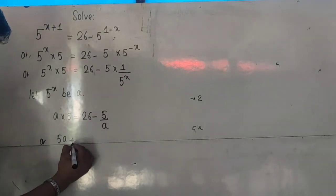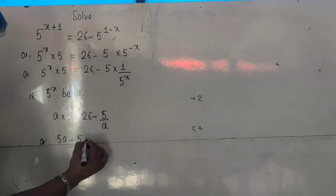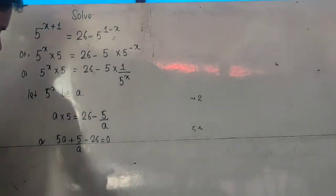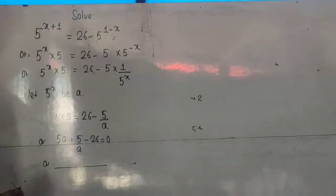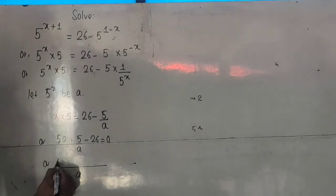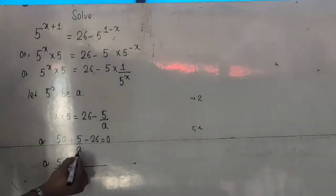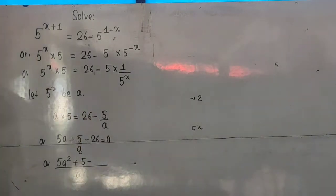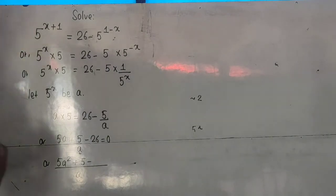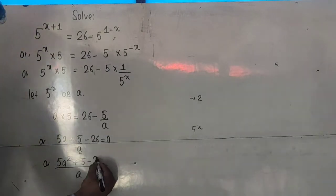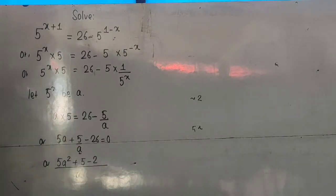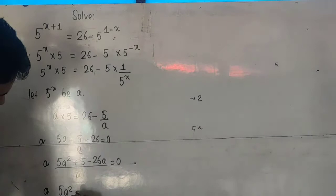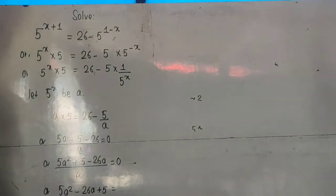Moving all terms to the left: minus 5 over a becomes plus 5 over a, and plus 26 becomes minus 26, giving 5a + 5/a - 26 = 0. Taking LCM as a, I multiply: 5a times a gives 5a², and LCM times 26 gives 26a. So I get 5a² - 26a + 5 = 0.